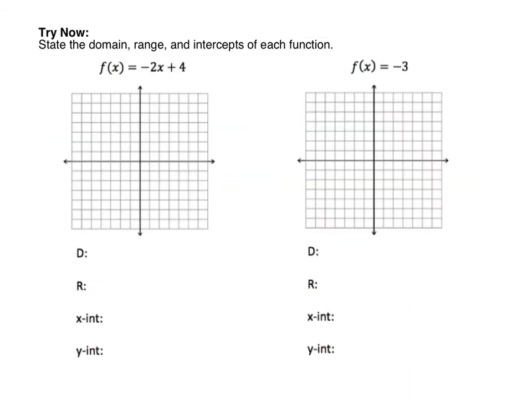Here are two problems for you to try on your own. You're going to state the domain, range, and intercepts of each function — be sure to graph it first. Please pause the video now. You're going to graph f of x equals negative 2x plus 4, and the second line is y equals negative 3. Remember that f of x is the same as y. Once you've made your graphs, label the domain, range, and x and y-intercepts. If one doesn't exist, write the word none. Pause the video now and when you hit play, I'll have the solutions.